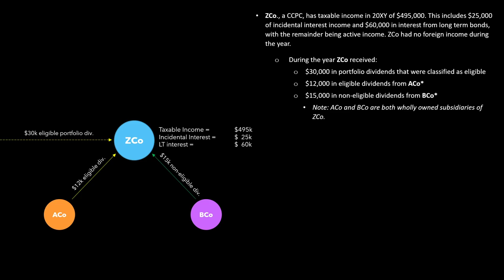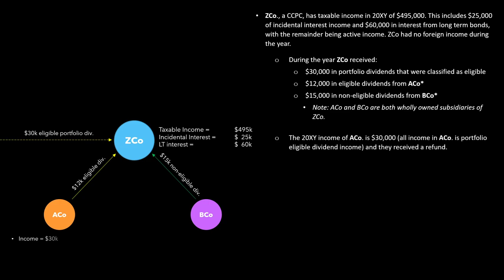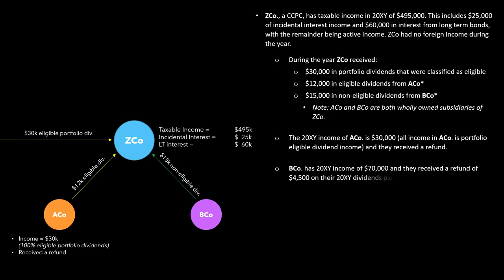Moving on, we can talk about the income of ACO. The income of ACO is $30,000, and note that all income in ACO is portfolio-eligible dividend income, and they did receive a refund — but we aren't told how much that refund is, which is going to prove to be a little more work for us when we go to solve this problem later. BCO has income of $70,000, and they received a refund of $4,500 on the dividends paid. Knowing the exact amount of the refund will simplify things.